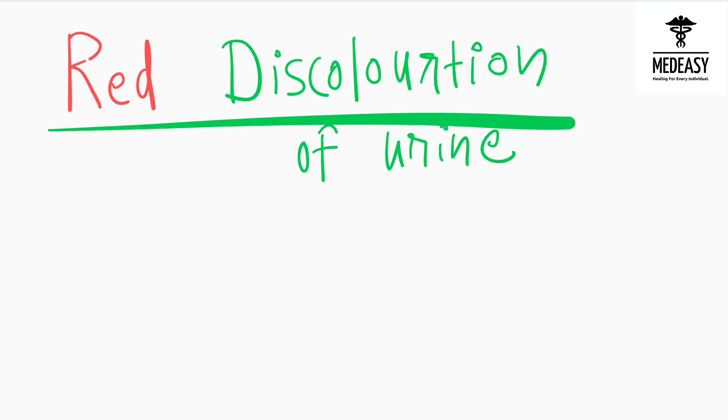Hello and welcome to our new video. Today we will talk about drugs which cause red discoloration of urine. If a patient comes with red discoloration of urine, we can suspect three drugs he or she is taking.